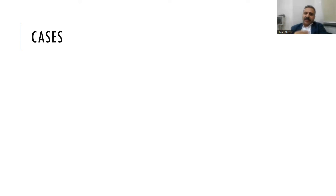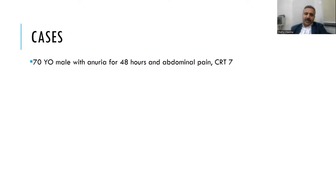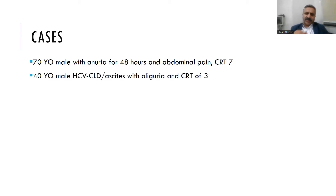Let's apply what we've learned through clinical cases. A 70-year-old male with anuria for 48 hours, abdominal pain, and creatinine of 7 — most likely urinary retention due to BPH, causing bladder distension and rising creatinine. Place a Foley catheter and confirm with ultrasound. A 40-year-old male with hepatitis C, decompensated liver disease, and ascites with decreased urine output and rising creatinine — mechanisms could include large-volume ascites, increased intra-abdominal pressure, hepatorenal syndrome, SBP sepsis, or vasodilatation causing renal hypoperfusion and pre-renal azotemia.